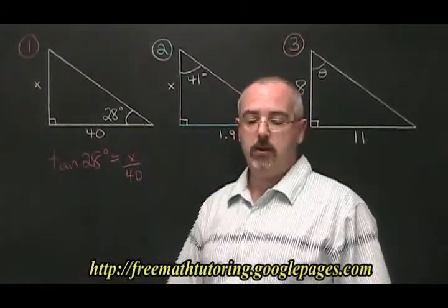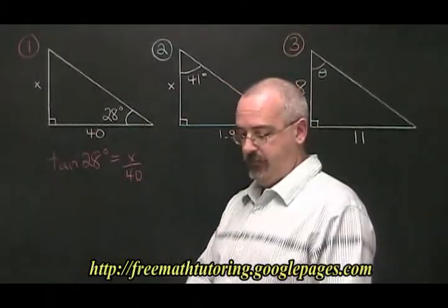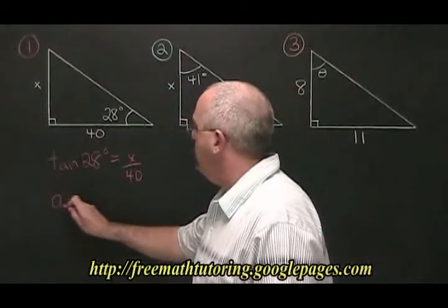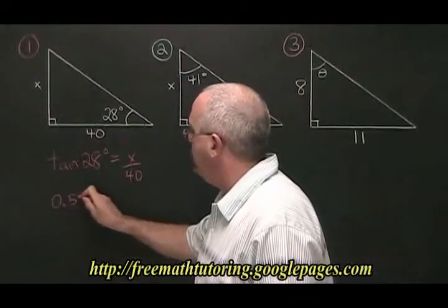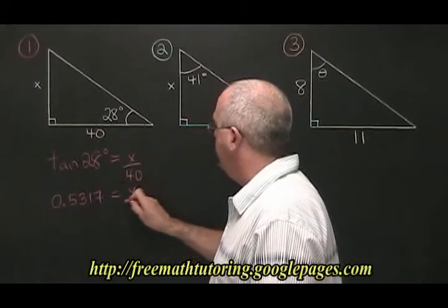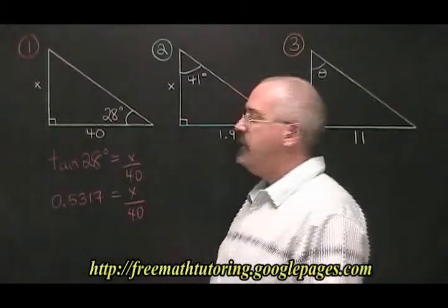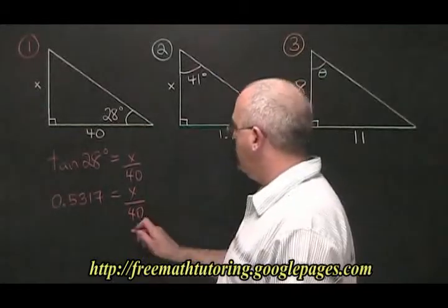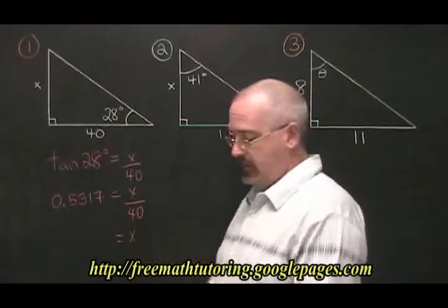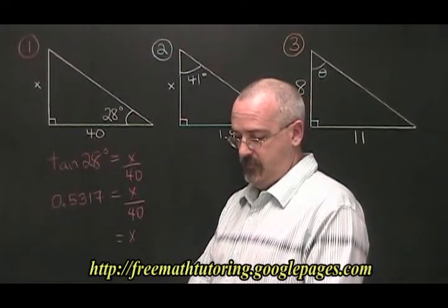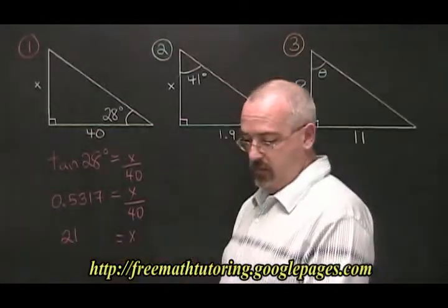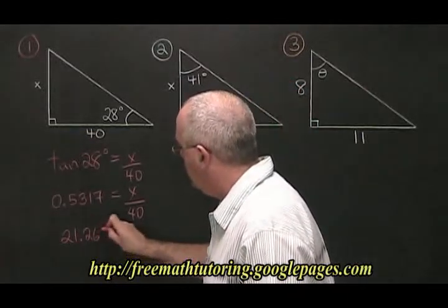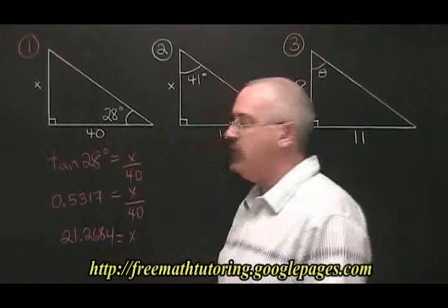The TAN of 28 degrees is equal to 0.5317, so we replace it in the formula with 0.5317. Then since our variable is being divided by 40, we multiply both sides by 40 and we get this. X is equal to 21.2684. We have our answer.